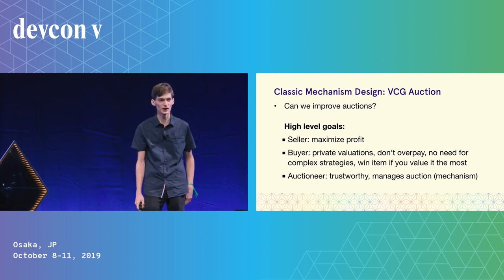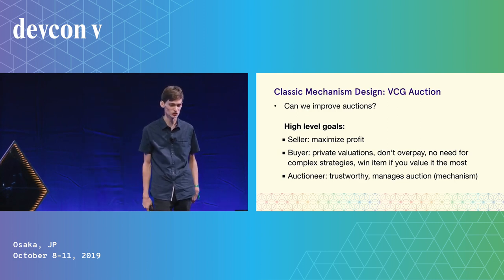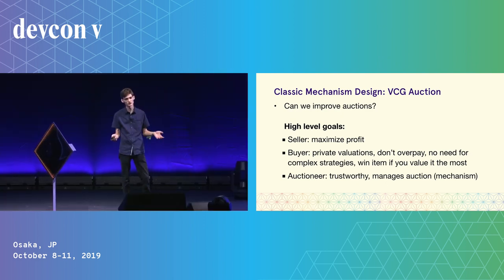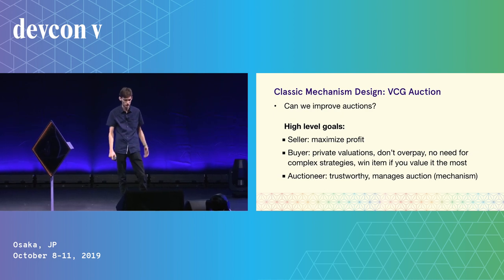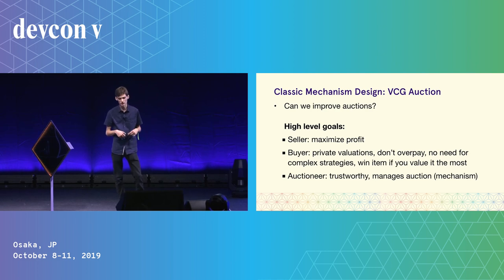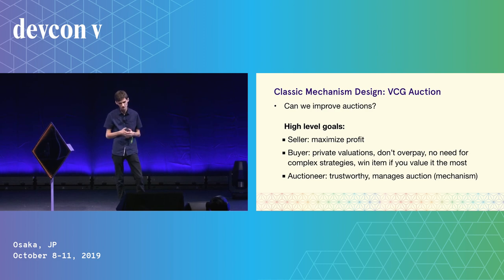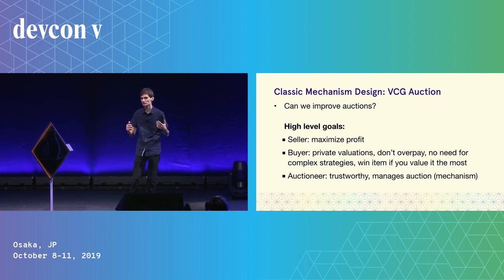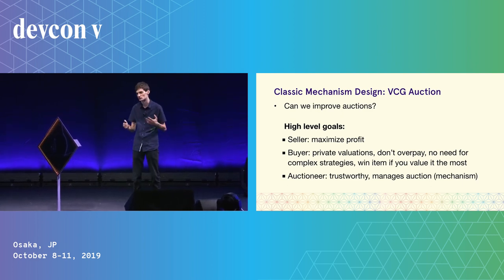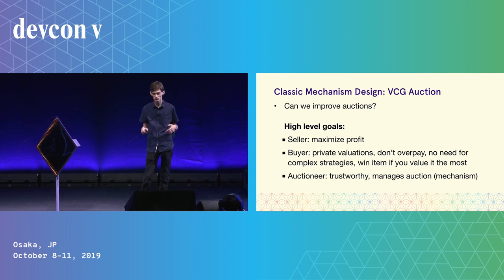One of the early things mechanism design looked at is improving auctions. In terms of the social choice function, the seller's goal is to maximize profit. Buyers don't want to overpay, don't want to think about complex strategies like when to place a bid or whether to wait until the last second, and want to win the item if they value it more than any other buyer.